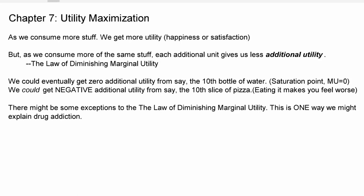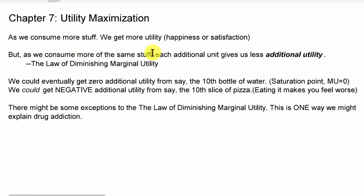So how do people use their limited resource of money — or other things like time — in order to maximize their happiness? The idea of utility is that as we consume more stuff, we get more utility. Utility is just what we call happiness or satisfaction. A key assumption is that as we consume more of the same stuff — like eating additional slices of pizza or drinking more bottles of water — each additional unit gives us a little less marginal utility.